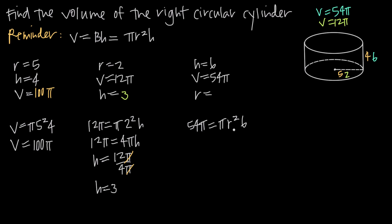To solve for r, we divide both sides by 6 pi. On the right, pi cancels with pi and 6 cancels with 6, leaving just r squared. On the left, pi cancels and 54 divided by 6 is 9, so we get 9 equals r squared. Taking the square root of both sides gives r equals 3. Technically we get plus or minus 3, but since the radius is a distance in real space it can't be negative, so the radius is 3 units.